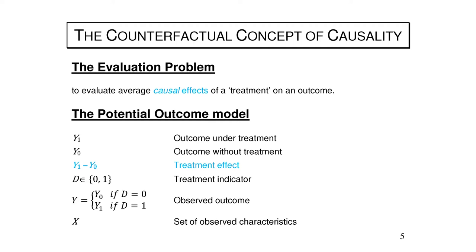The treatment can be basically anything you're interested in assessing. It can be a government intervention in the labour market like a training program or an employment subsidy, an educational subsidy like the education maintenance allowance, increasing computers per pupil or decreasing the pupil-teacher ratio, investing in a degree where the outcome is wages, or the effect of smoking on your health or your children's health. You have a treatment and one or more well-defined outcomes and you want to know the impact.